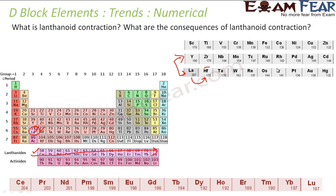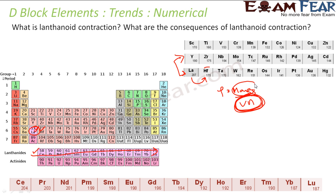Another consequence is the high density of post-lanthanide elements, because these elements have a smaller radius. Density is mass divided by volume. Since the radius is less, the volume is less, but the mass keeps increasing. So with more mass and less volume, these elements have high density.